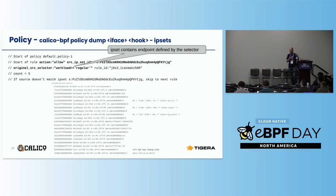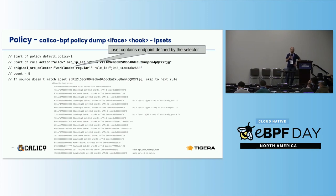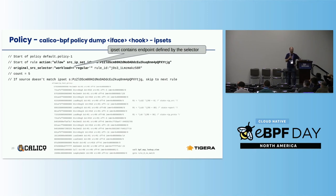I mentioned the eBPF maps a couple of times. These mostly come into play when the policy uses a selector that can match with very many IPs and CIDRs, which would be too complex to put in code. So we put it in what we call an IP set — we borrowed the name from the iptables world because it is essentially a set of IPs. The policy dump shows you which selector is implemented by what IP set, and the Calico BPF tool allows you to inspect the IP set and verify whether it matches your expectations.